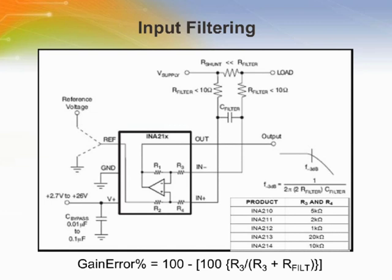An obvious location for filtering is at the output of the INA210 through INA214. However, this location negates the advantage of the low output impedance of the internal buffer. The only other option for filtering is at the input pins of the INA210 through INA214. This location requires consideration of the plus or minus 30% tolerance of the input impedance. Using the lowest possible resistor values minimizes the initial shift in gain and effects of tolerance.